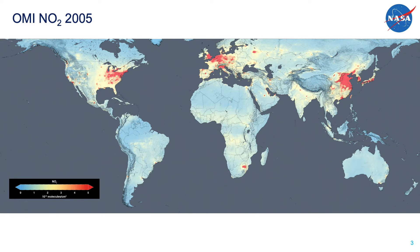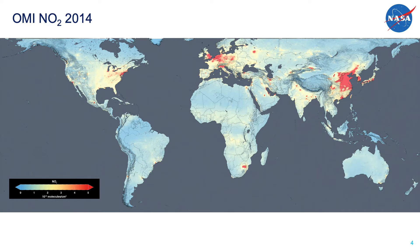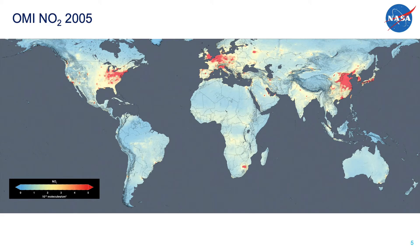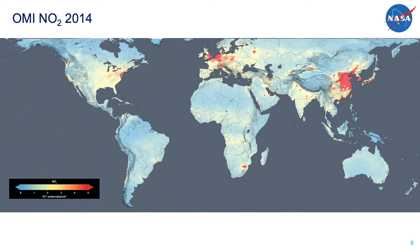The next slide shows the same type of data, except for 10 years later. This map is the annual OMI NO2 data for 2014. If you look carefully, you can see that the NO2 levels in the northeastern U.S. have decreased considerably. In addition, the NO2 levels in China have increased. Europe has slightly less NO2, but China and India are emitting more than they were in 2005.